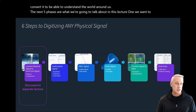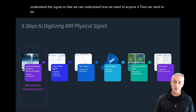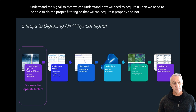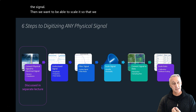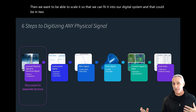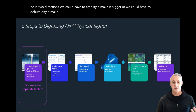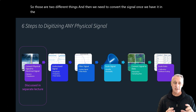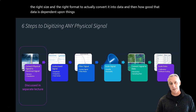We've had a whole lecture on converting a physical signal into an electrical signal using sensors and transducers. The next five phases are what we'll cover here. First, we want to understand the signal so we know how to acquire it. Then we do proper filtering so we can acquire it without artifacts. Then we scale it to fit into our digital system — either amplifying it or de-amplifying it. Then we convert it to data, where quality depends on resolution and sampling rate.